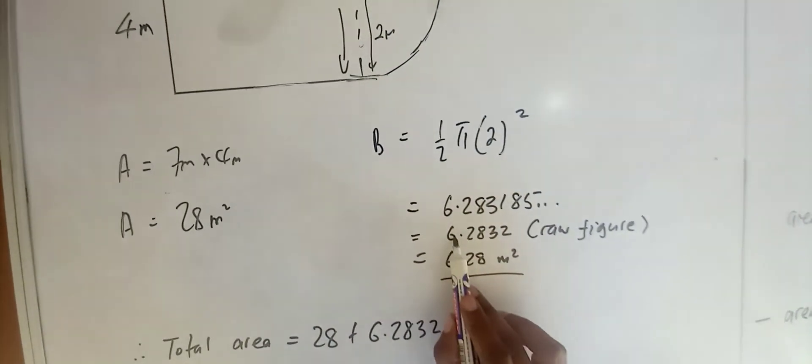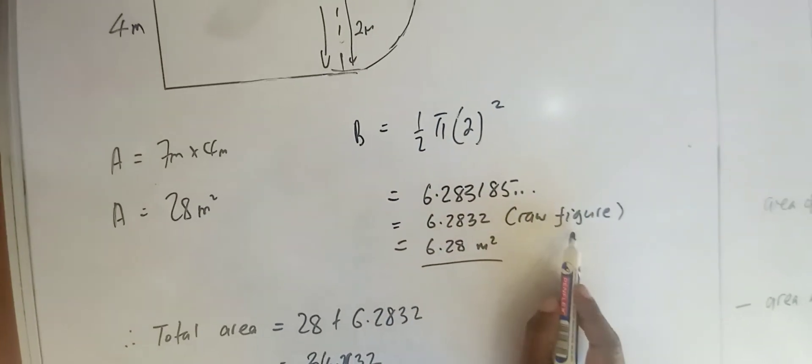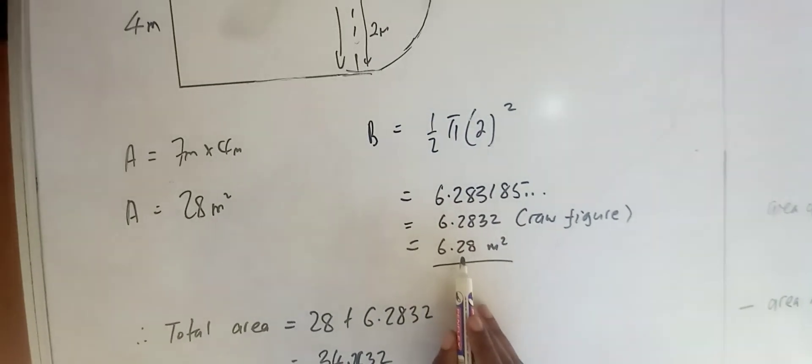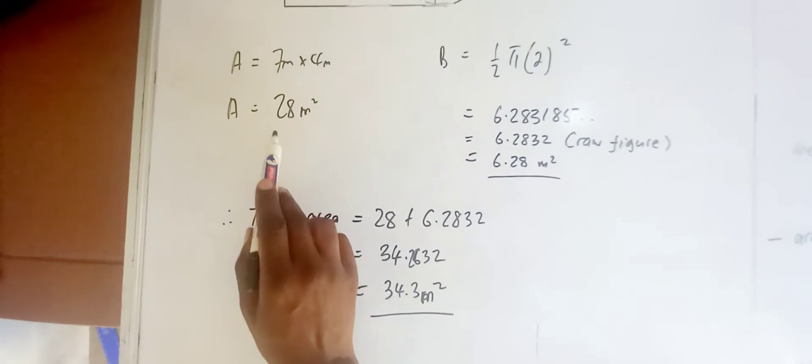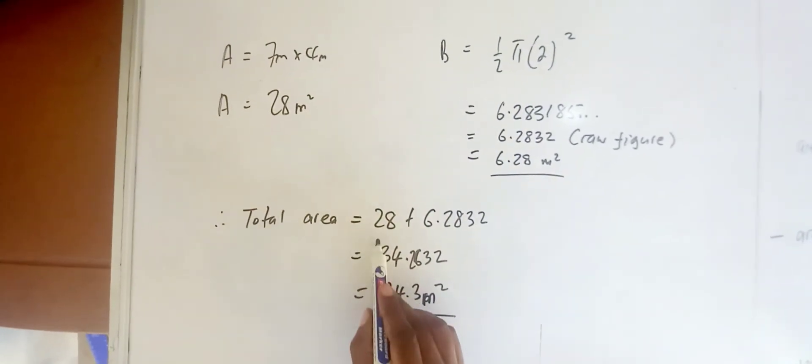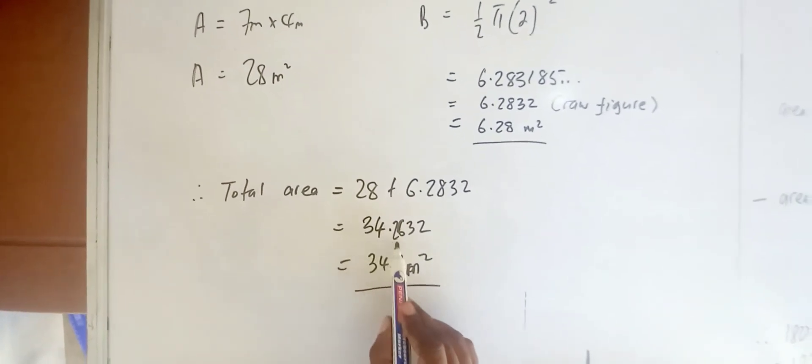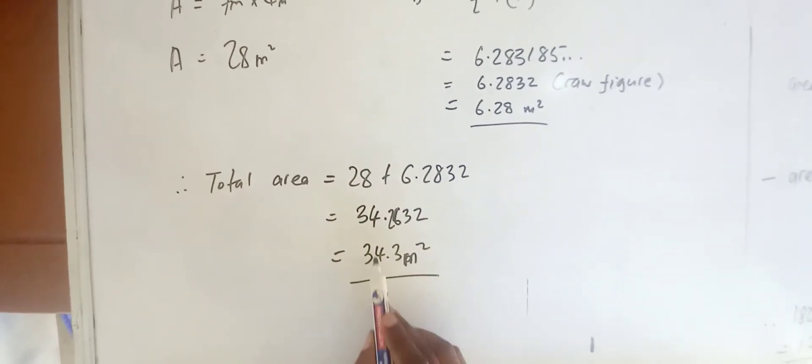Take note that you have to write your answer to four decimal places first. This is known as the raw figure because you might be required to use it elsewhere. You are discouraged from using the rounded answer. So you end up having the area of 28 square meters plus 6.2832, which will give you 34.2632. And then finally, your answer should be given to three significant figures.